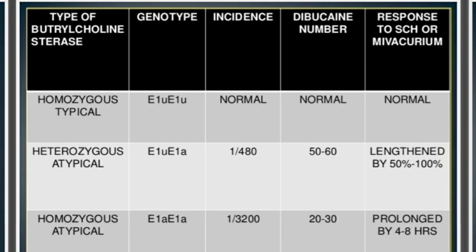If the Dibucaine number is 20 or less, then we can say that the person has an atypical homozygote plasma cholinesterase enzyme. So if the Dibucaine number is either between 40 to 60 or even less, it indicates that the individual may have atypical plasma cholinesterase enzyme, and hence he or she may develop prolonged neuromuscular blockade following the administration of succinylcholine, as the plasma cholinesterase enzyme is responsible for metabolism of succinylcholine.